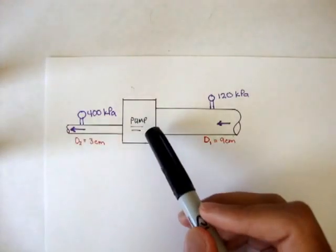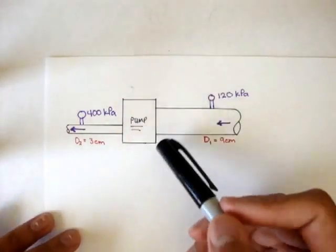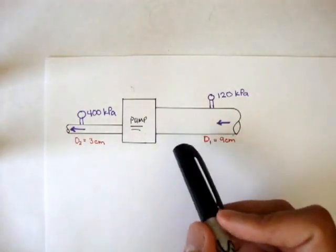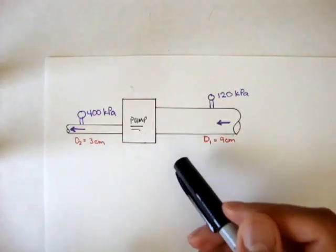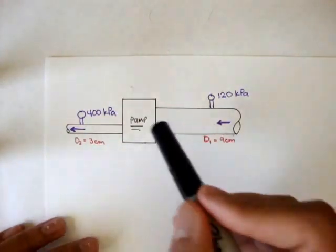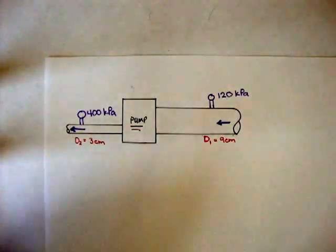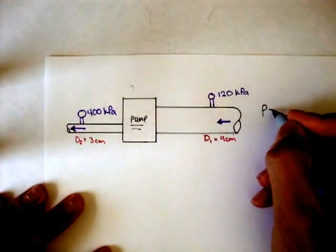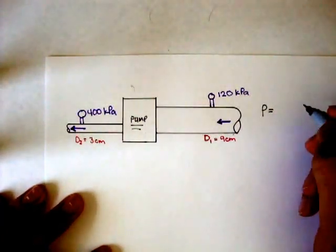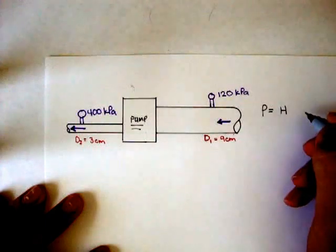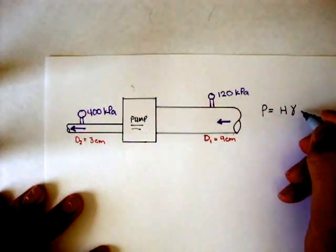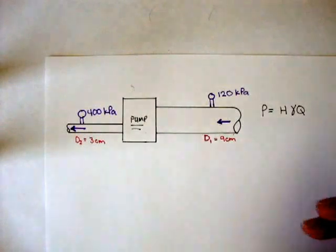And the pump, remember, gives energy to the water. And they're asking, what power in kilowatts is delivered to the water by this pump? And remember, we said that power is equal to the device head times the weight flow rate, which is gamma times Q.